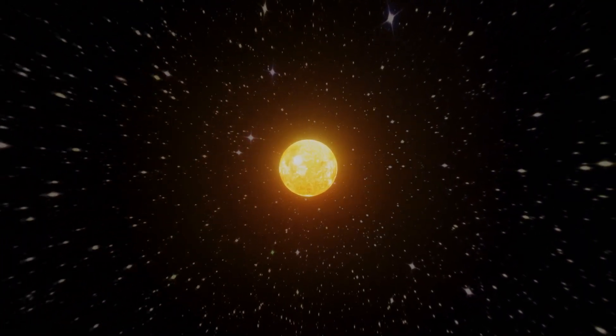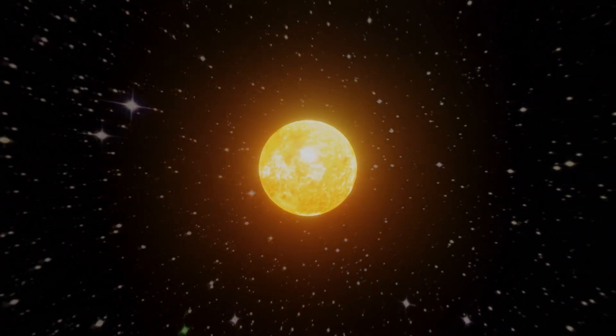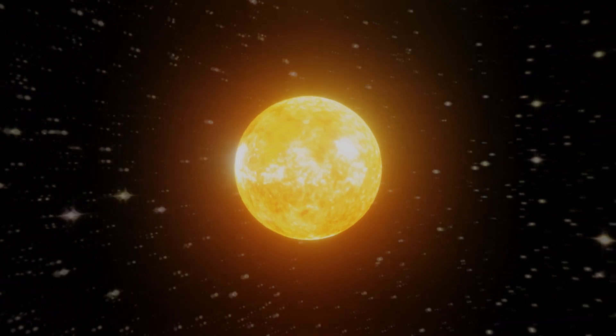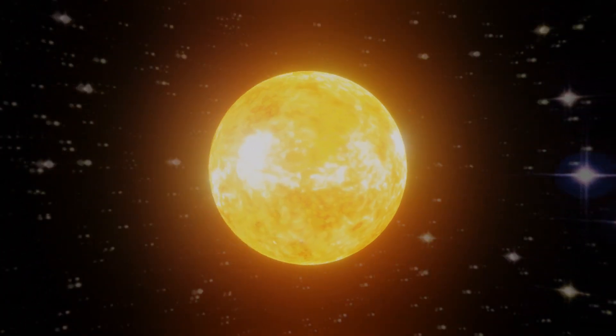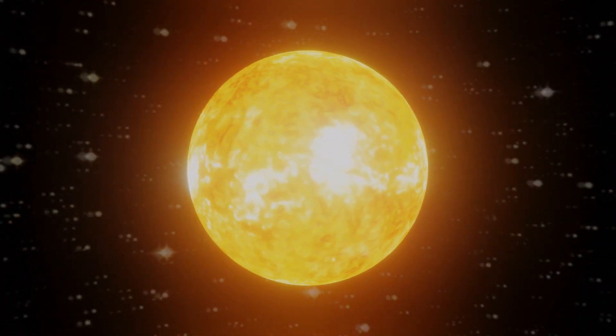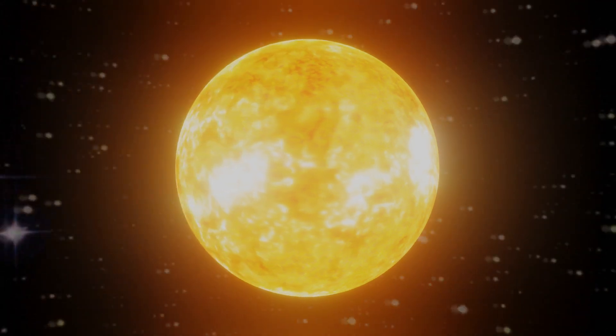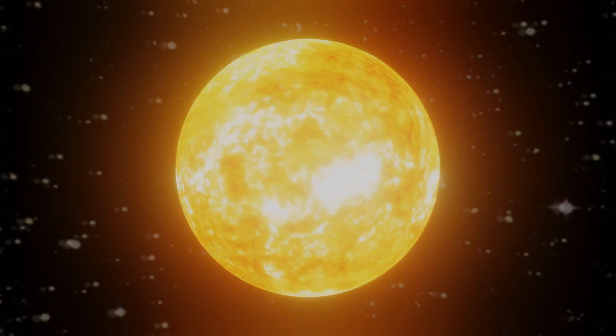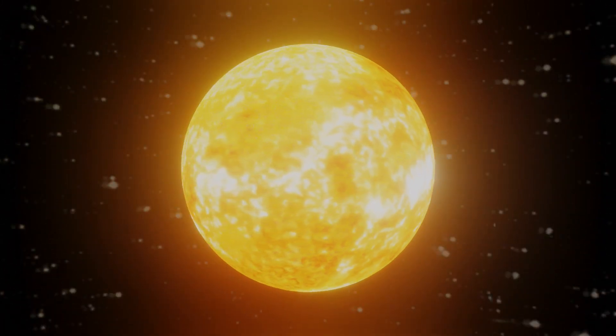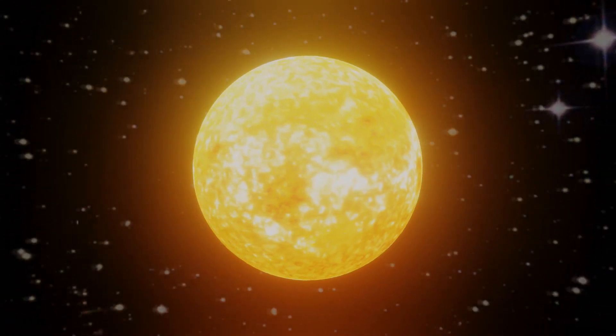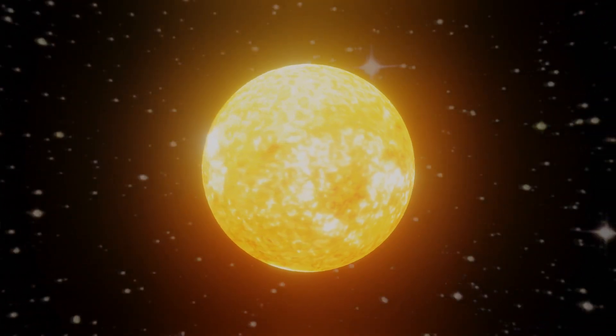The Sun constantly hurls plasma out into space, at speeds varying from 180 to 500 miles per second, fast enough to escape the Sun's gravitational pull. This is called the solar wind. Its two main sources are coronal holes and helmet streamers near the Sun's equator, or streamer belt.